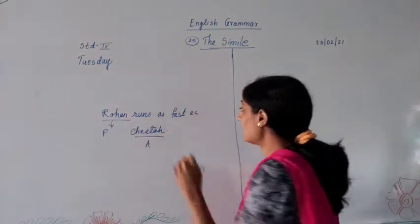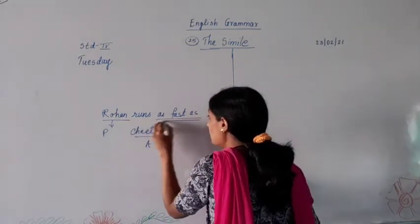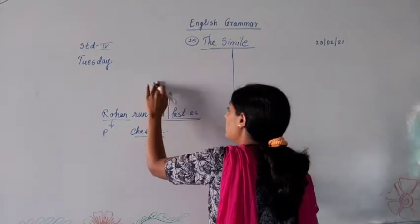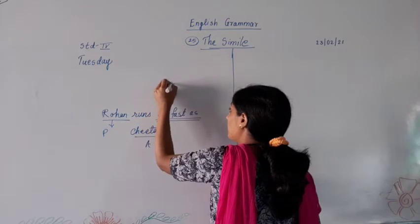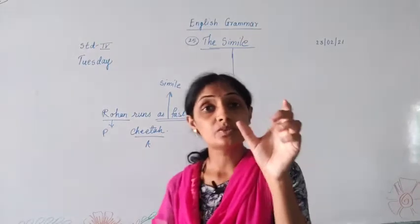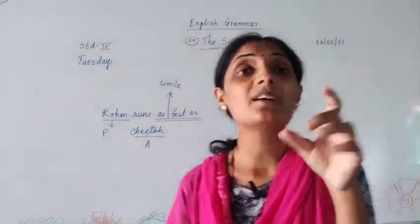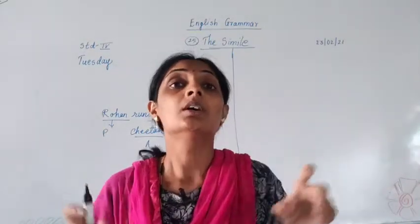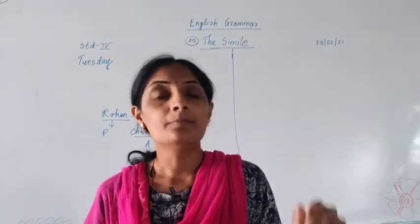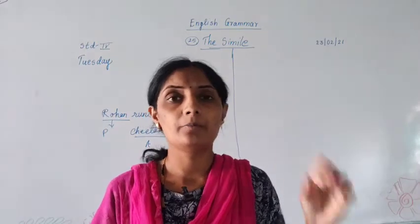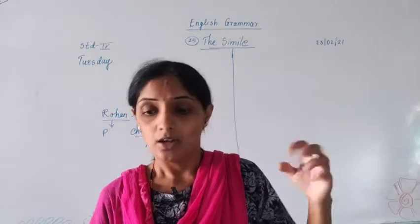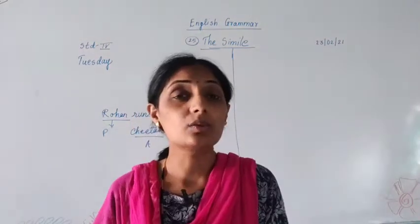When we use words to do comparison, 'as fast as' is a simile. The words which are helpful to make comparison between two nouns — those words are known as simile. For example: as brave as a lion, or as brave as King Akbar.